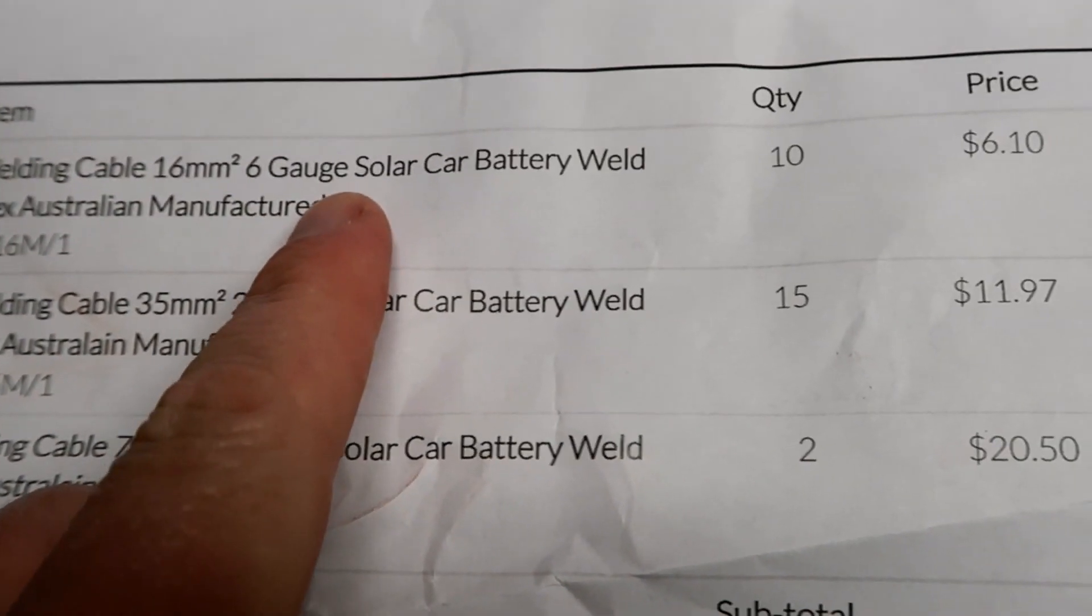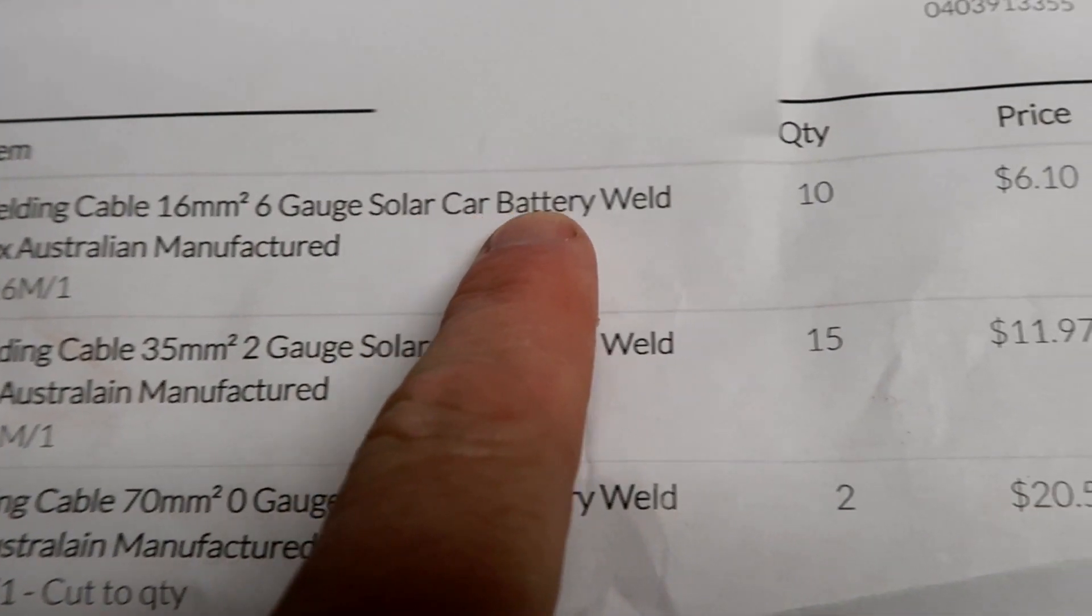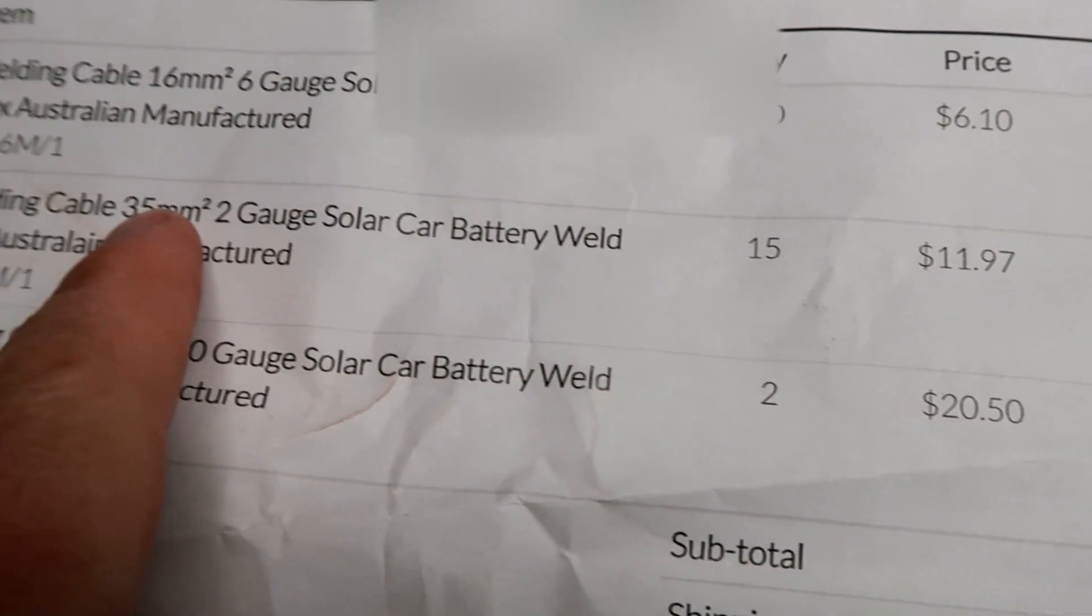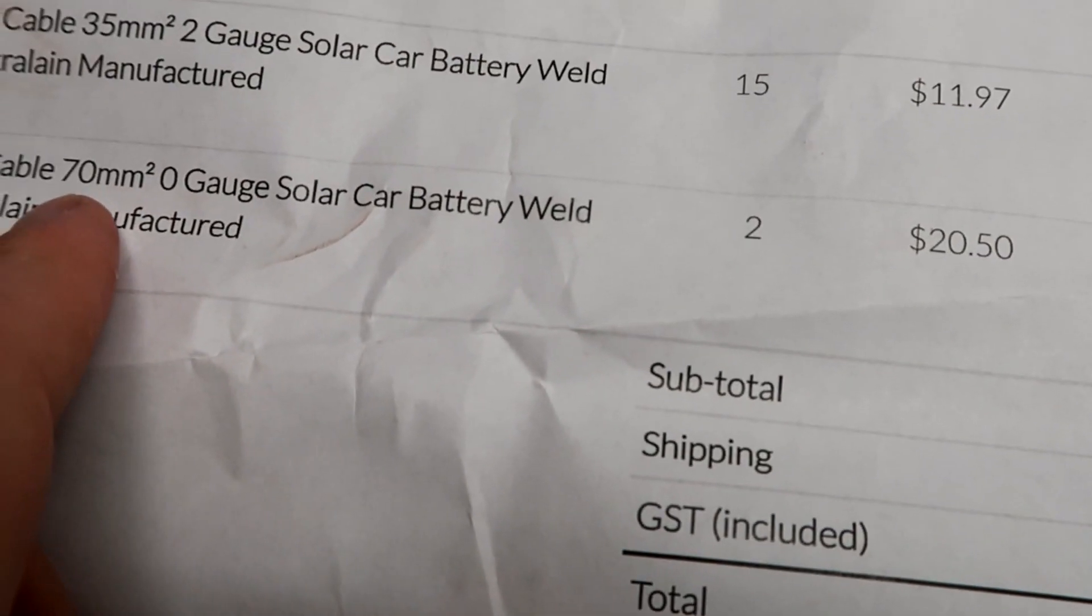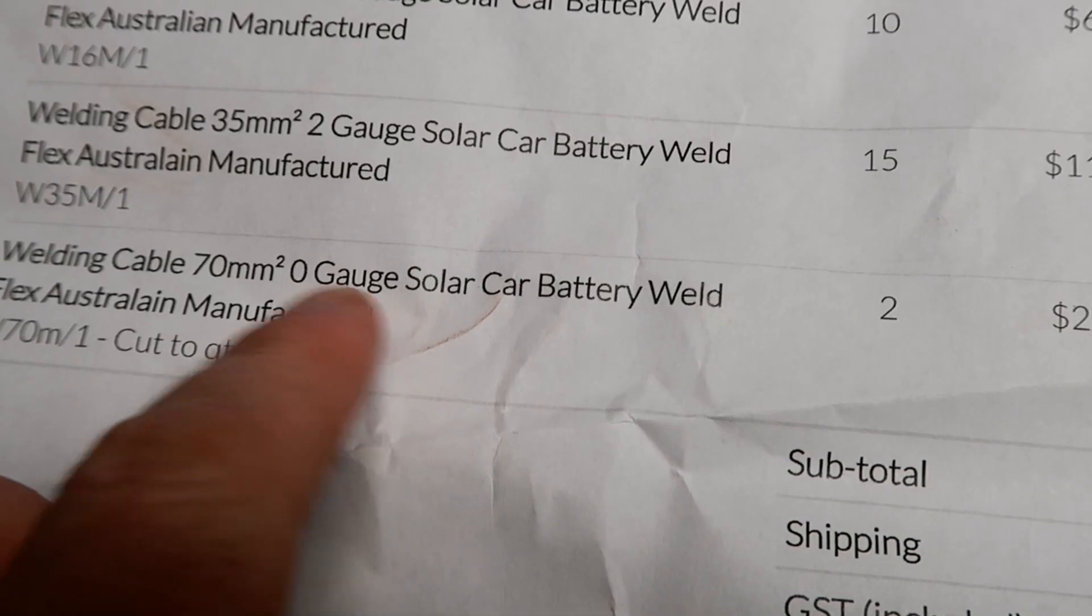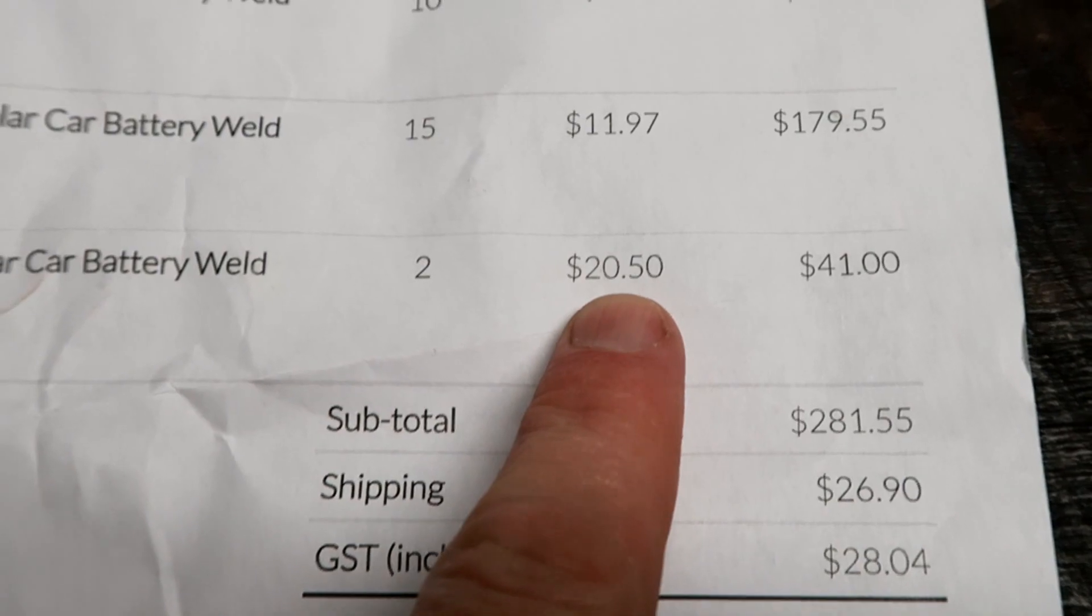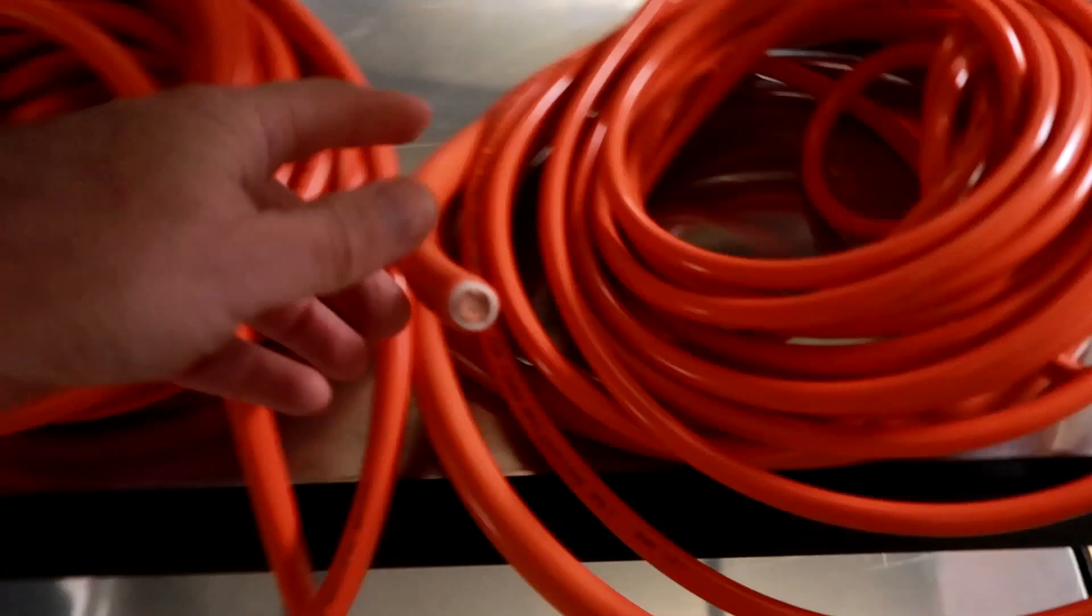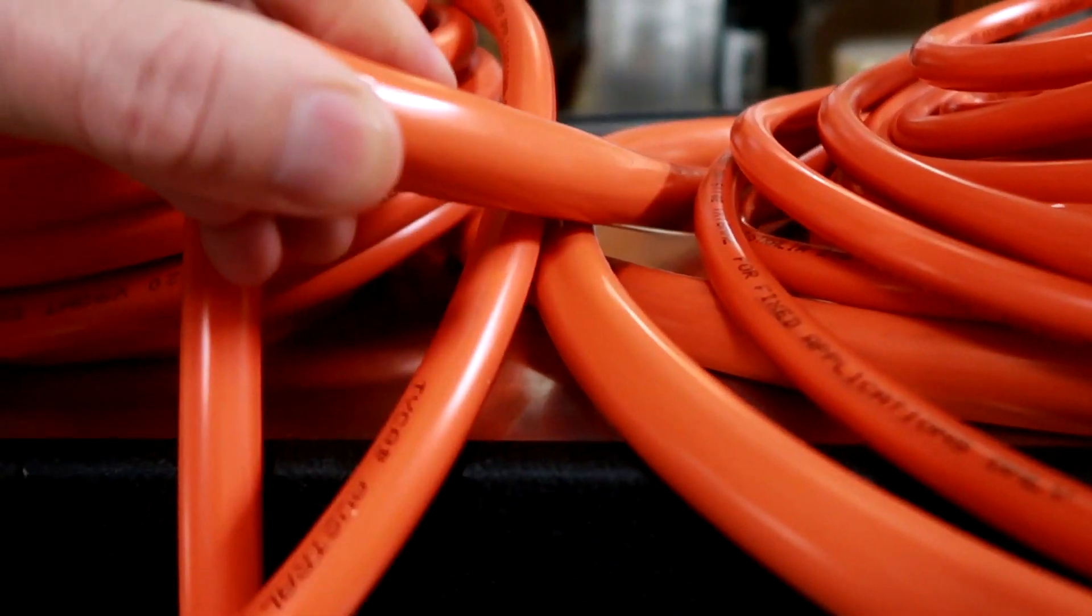And some 16 millimeter for the solar charge controllers. And this is what I paid for the cable. So this is 16 millimeters, six gauge solar car battery welding cable. Six dollar ten. The 35 millimeter is two gauge, twelve dollars per meter. And the 70 millimeter is zero gauge. Weird. Why would you use gauge at twenty dollar fifty per meter? All in total three hundred and eight dollars for cabling. Holy crap.